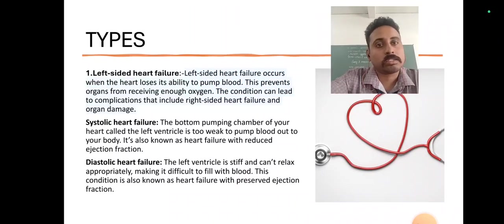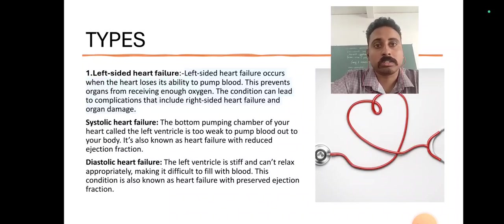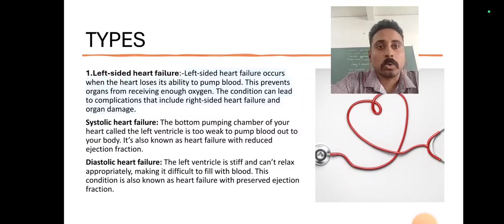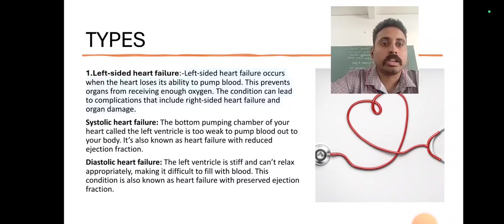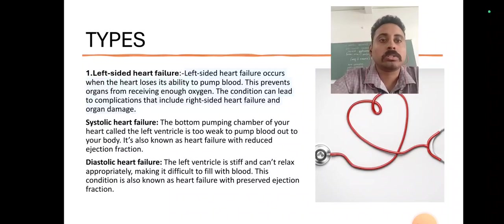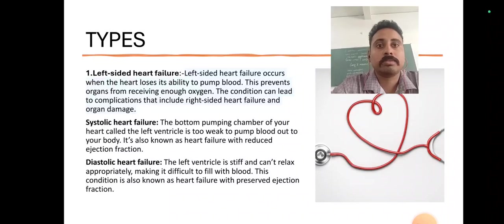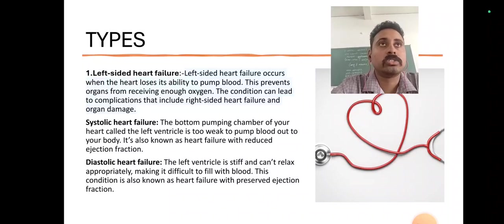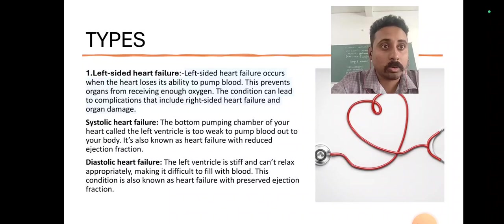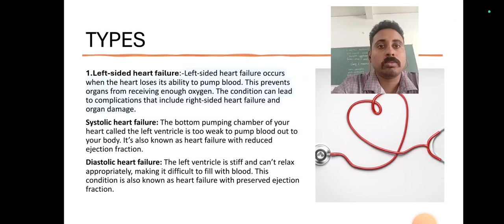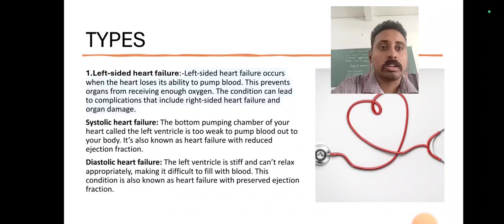The next one is the types of congestive heart failure. The first type is left-sided heart failure, which occurs when the heart loses its ability to pump blood. This prevents organs from receiving enough oxygen. The condition can lead to complications including right-sided heart failure and organ damage, because the left side has a left atrium and left ventricle, and when left-sided heart failure occurs it has an inability to pump blood through the organs.